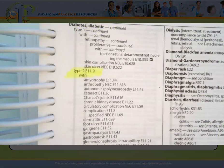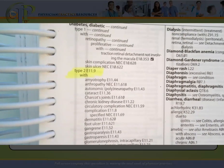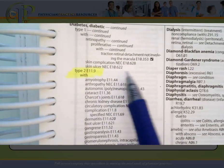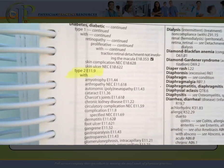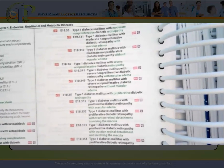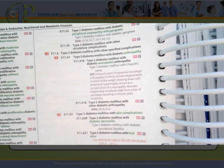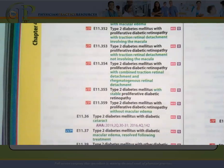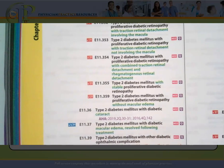So my patient has type two diabetes with cataract. I need to go down to E11.36. If I were to stop at E11.9, that wouldn't capture the cataract. In any case, you always have to verify the code in the tabular list. So I'm going to go over to E11.36, and on page 520, E11.36 says type two diabetes with diabetic cataract.